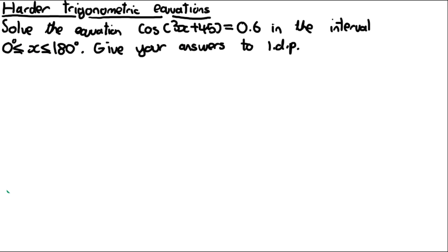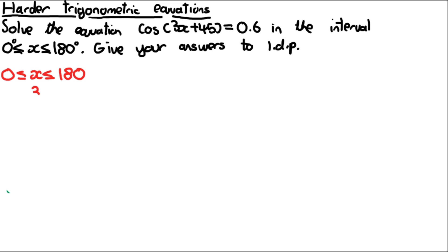There could also be a question combining a stretch and a translation inside the function. Here's a question where you solve cos(3x + 45) = 0.6. The spec doesn't explicitly state AS students need this, but since it doesn't say otherwise, we'll cover it. The first step is to change the interval with respect to 3x + 45. We multiply by 3 first — if we add 45 first and then multiply, we'd also multiply the 45 by 3. So multiplying by 3 gives the interval from 0 to 540 for 3x, then adding 45 gives 45 to 585 for 3x + 45.